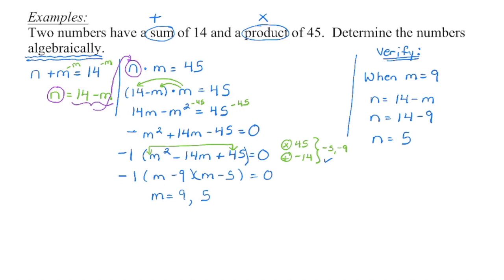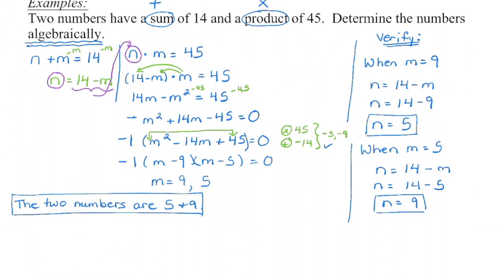Now I'm going to check the other one. My other solution is m equals five. When m is five, I go back to what we started with and fill it in — we get a value of nine for n. So these two in this particular question happen to be interchangeable. That tells me the two numbers that give me a sum of 14 and a product of 45 are five and nine.